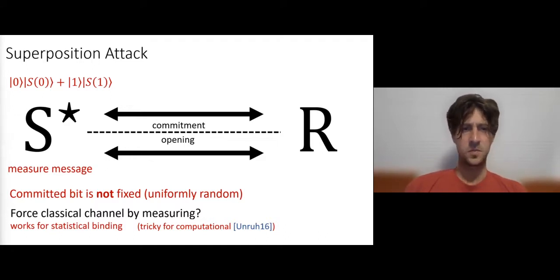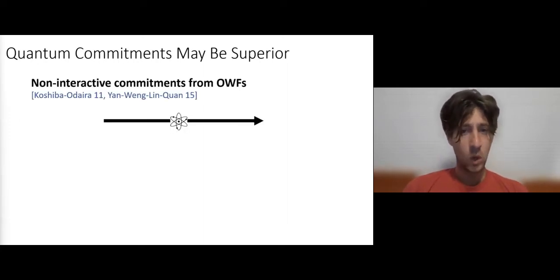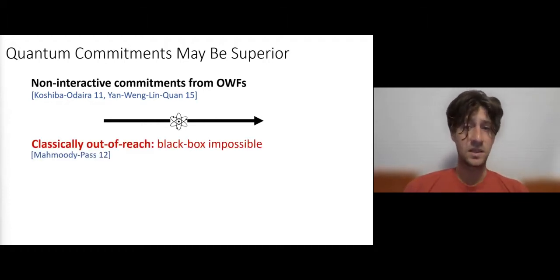So what's the catch? The point is that by forcing the commitment to be classical, we might be missing out on features that can only be achieved quantumly. And one known example where quantum commitments are really superior to classical ones is that they can be constructed non-interactively from one-way functions. And this is not known classically, and in fact, it is subject to black box barriers.